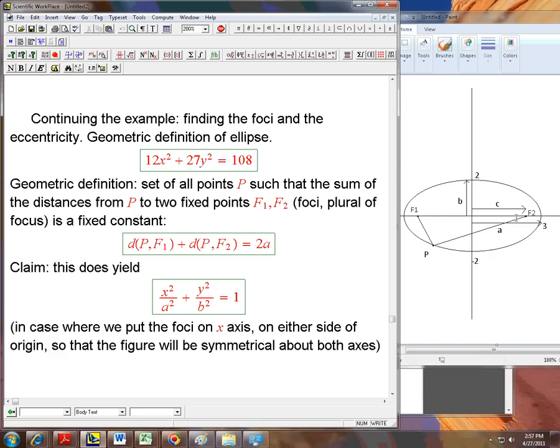So we're always going to do that right now. We'll shift it later. So we put the foci here, or equivalently, we choose our coordinates so that the origin is right in between and these guys are on the x-axis. And then the claim is that if I look at all the points p, so that the sum of this distance and this distance is always the same, I'm going to get an elliptical shape.